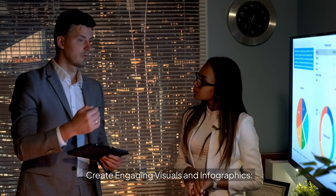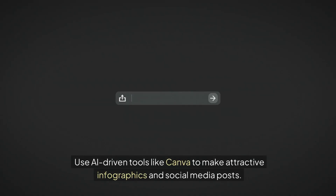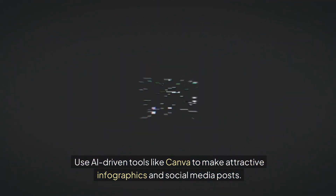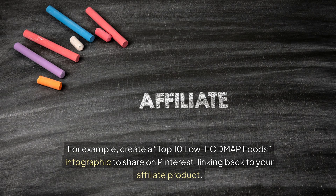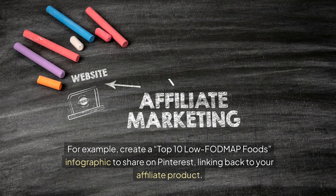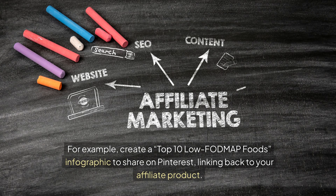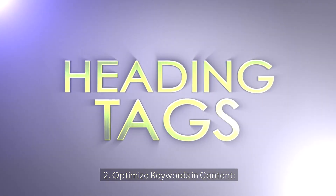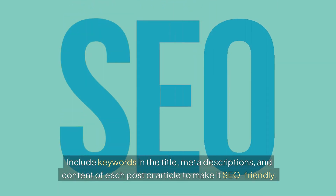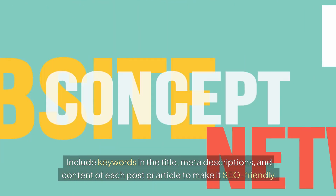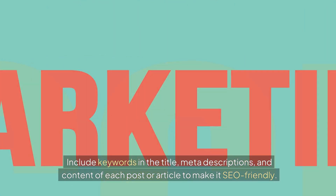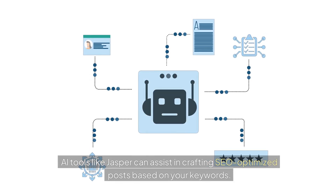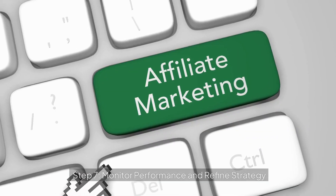Step six: develop a content marketing plan with AI assistance. Use AI-driven tools like Canva to create attractive infographics and social media posts — for example, a 'Top 10 Low FODMAP Foods' infographic to share on Pinterest linking back to your affiliate product. Include keywords in titles, meta descriptions, and content to make posts SEO-friendly. AI tools like Jasper can help craft SEO-optimized posts based on your keywords.